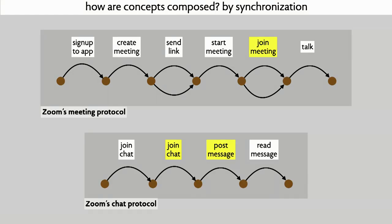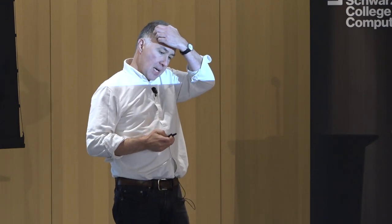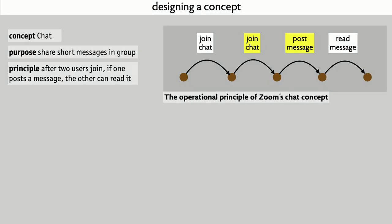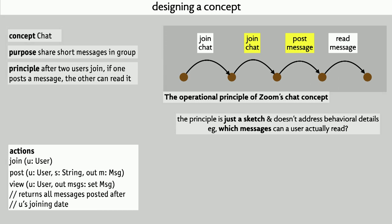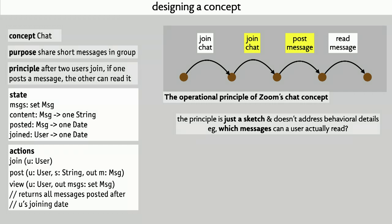How are these concepts put together? In short, by synchronization. All we need to say, for example, is that in the chat concept, you join a chat in Zoom when you start the meeting if you're the person creating it, and if you're joining someone else's meeting, you join the chat when you join the meeting. This idea of synchronization allows us to get away from having any kind of procedure-call notion of one concept being superior to another. When designing a concept, there's more to consider — for instance, which messages can a user read in a chat, and whether they can view messages sent before they joined.